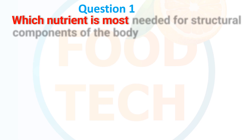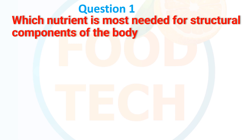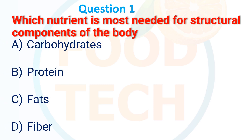Question 1: Which nutrient is most needed for structural components of the body? A. Carbohydrate, B. Protein, C. Fat, D. Fiber. The answer is B. Protein.